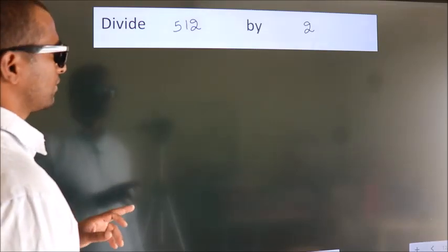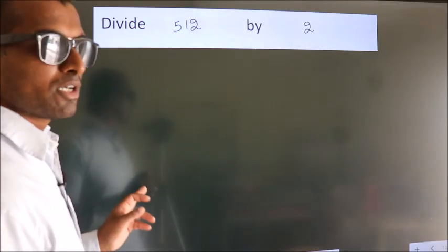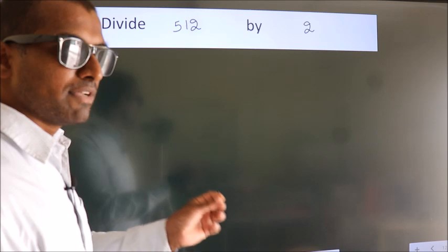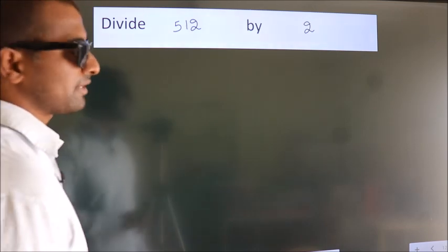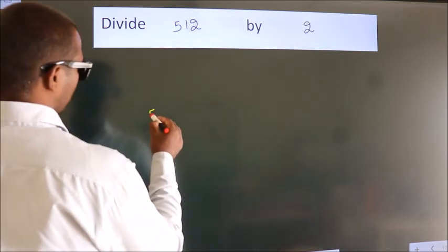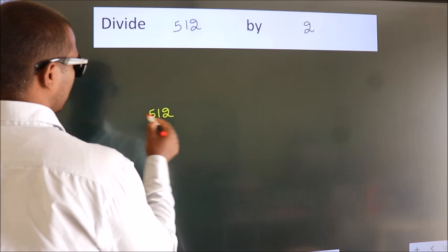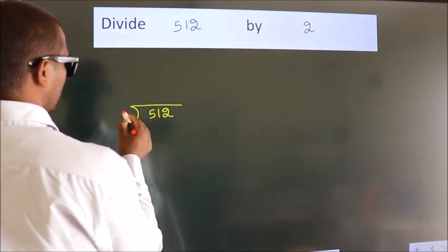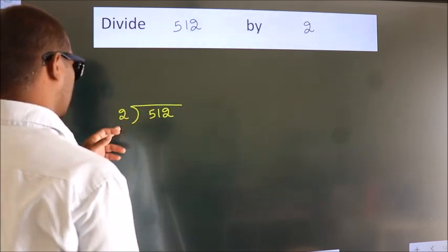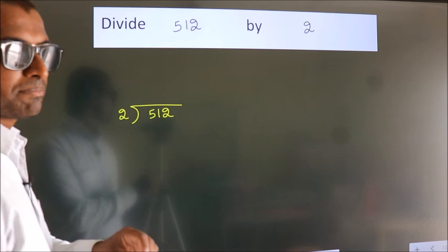Divide 512 by 2. To do this division, we should frame it in this way. 512 here, 2 here. This is your step 1.